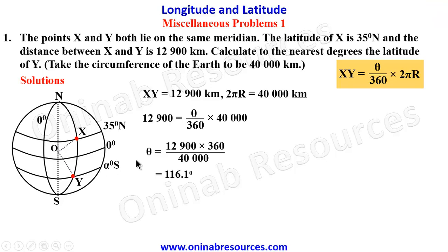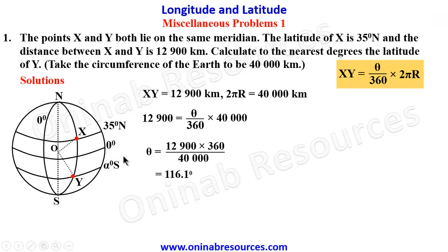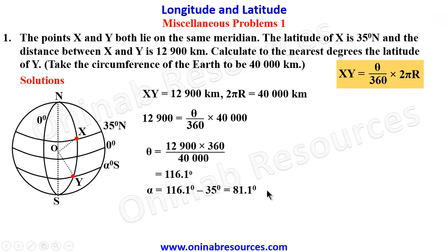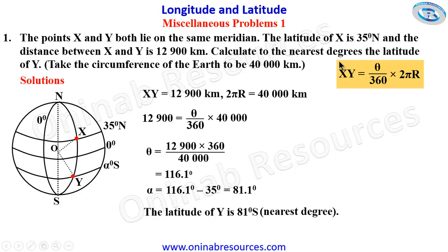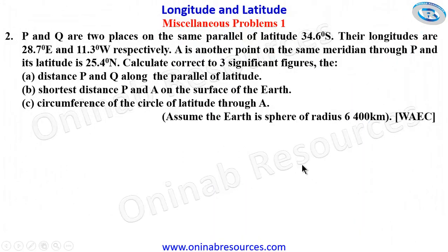We can see that Y is actually in the south, since 116.1 degrees is greater than 35 degrees north. If it were less, then both points would be in the same hemisphere — the north. To get alpha: 116.1 minus 35 = 81.1 degrees. Therefore the latitude of Y is 81 degrees south, to the nearest degree. That's all for the solution of Problem 1.